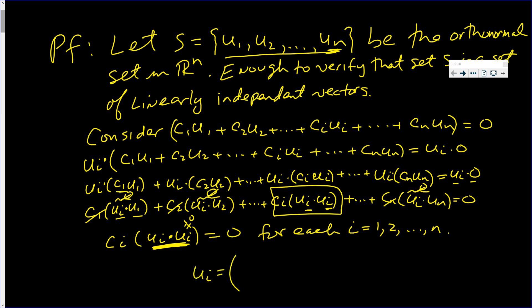To be zero, u sub i would have to be zero. So the length of u sub i, this would imply that the length of u sub i is not one. But that contradicts that it's in an orthonormal set. So since these are not zero, the dot product can't be zero. This whole thing is not zero.